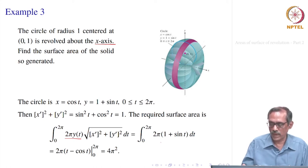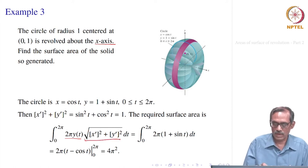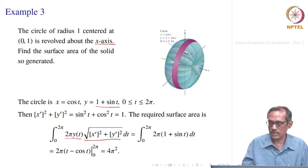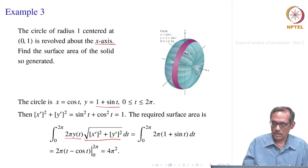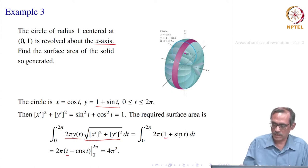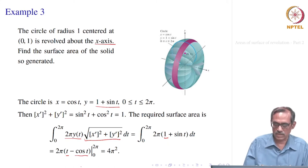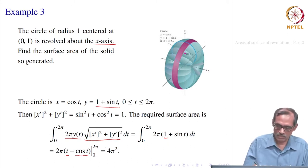Therefore, the surface area is the integral from 0 to 2π of 2π·y(t)·ds = 2π·(1 + sin(t)) dt. Integrating: 2π[t - cos(t)] evaluated from 0 to 2π, that simplifies to 4π².